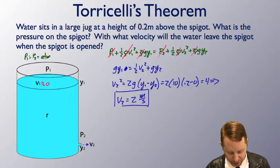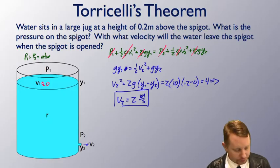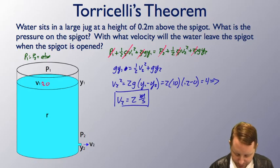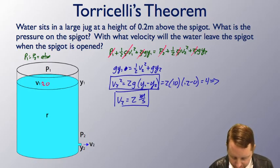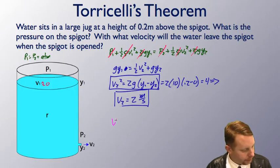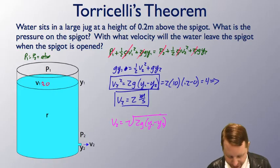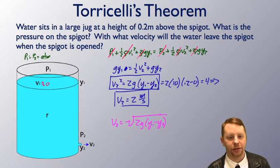The velocity coming out of the spigot down here on the bottom, 2 meters per second. And as you look at this, we've got a very important result embedded in here. v2 is going to be equal to the square root of 2g times y1 minus y2. And that result is actually known as Torricelli's theorem.